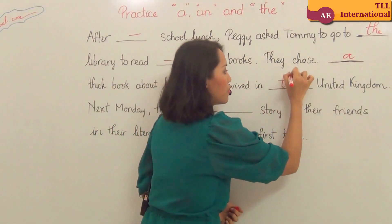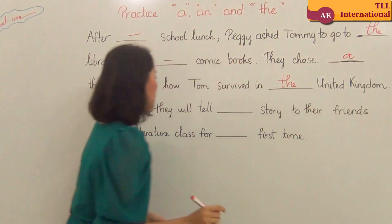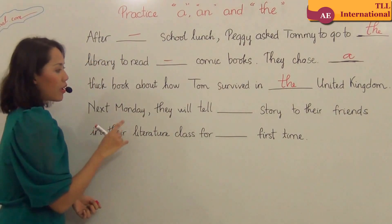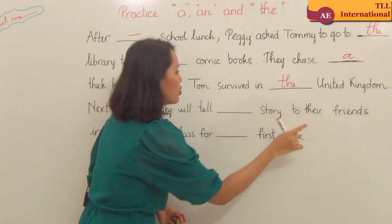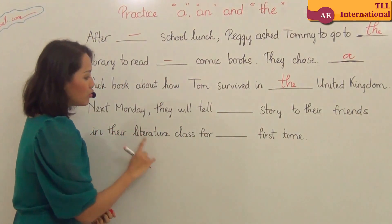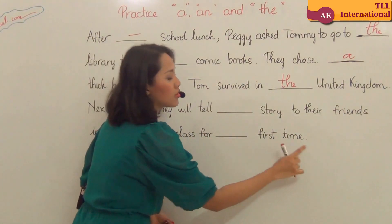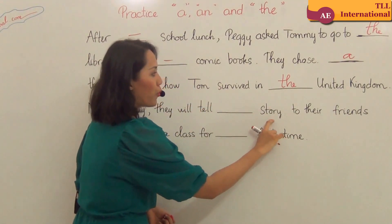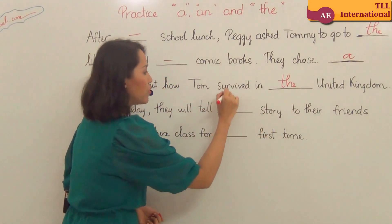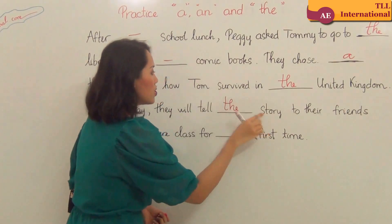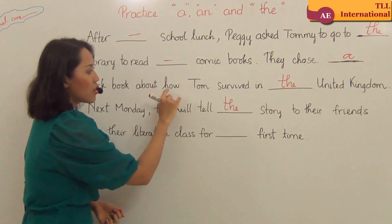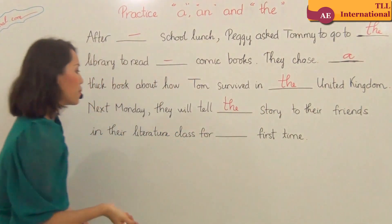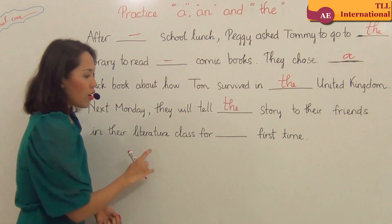Next sentence: 'Next Monday, they will tell the story to their friends in their literature class.' We mentioned 'story' here for the second time, so we need 'the'. Which story? The story about how Tom survived in the United Kingdom. When we mention something for the second time — or third time — we use 'the'.